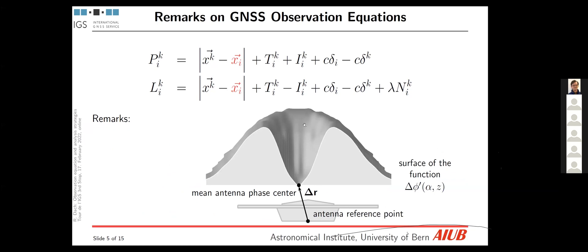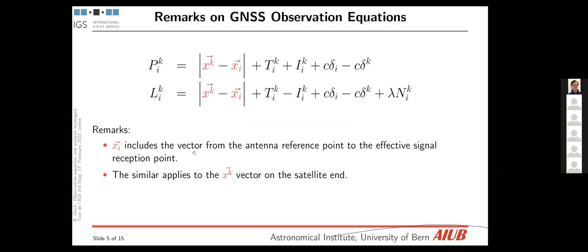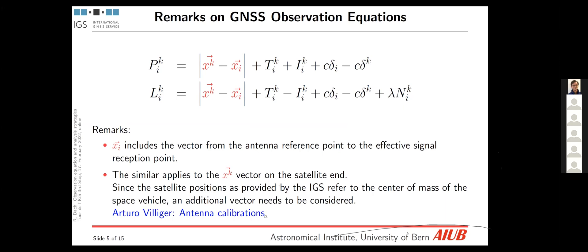Now, I have just put one vector for the station positions. But in fact, the measurement ends at a more complex surface, which is the electronic phase center of the antenna. And we need then some corrections depending from the direction where the signal is coming from. And this is a question of antenna calibrations, which is valid for receiver and satellite antennas. For the satellite antennas, we get the additional issue that the antenna is not mounted at the center of mass of satellite, but at the surface of the satellite body. And so we get an additional vector for this correction. Arturo Filiger, as the chair of the antenna calibration working group, will discuss this topic in his presentation.